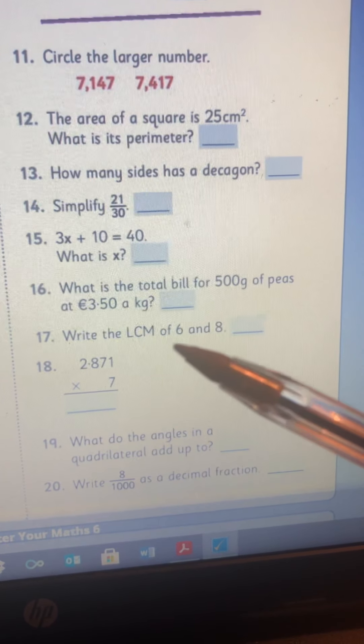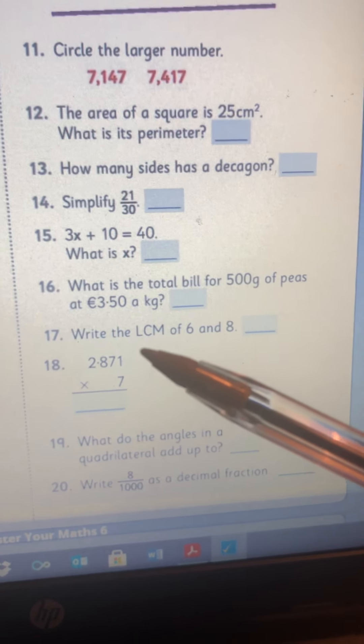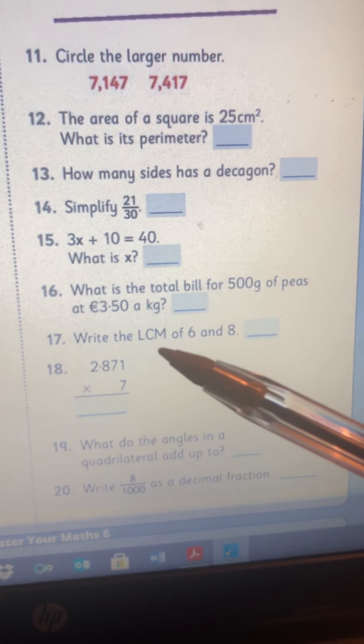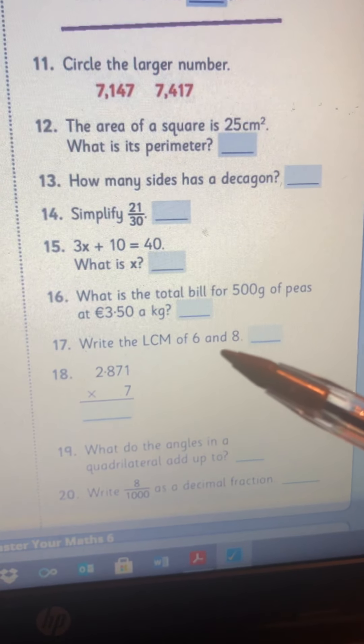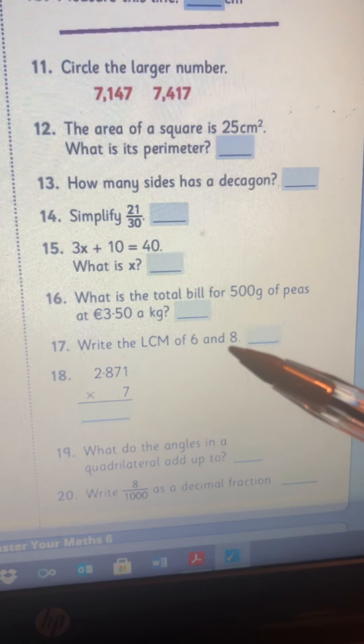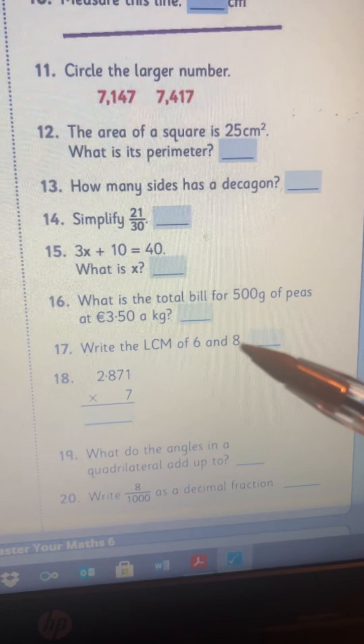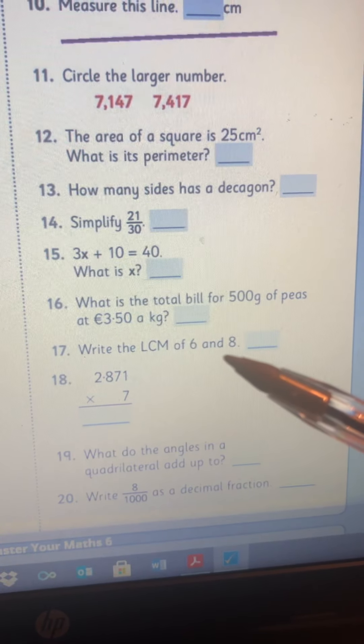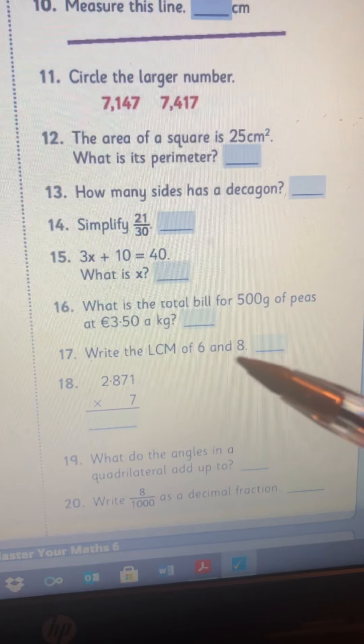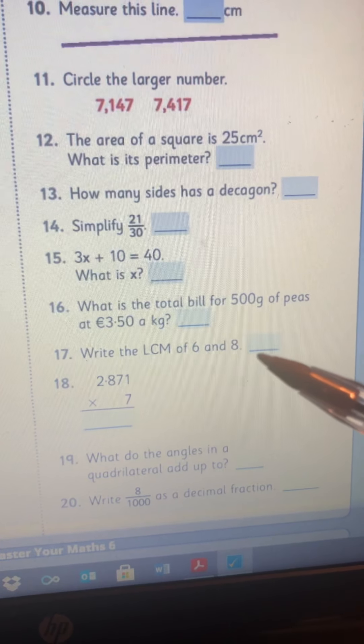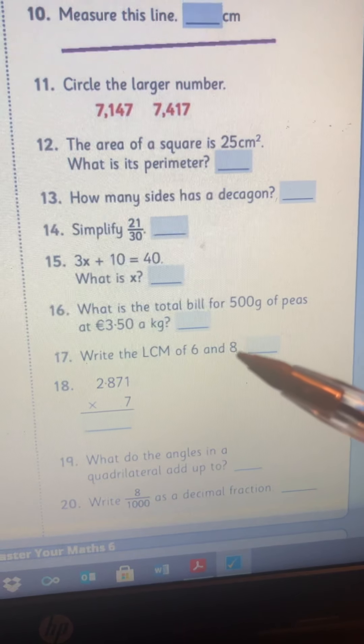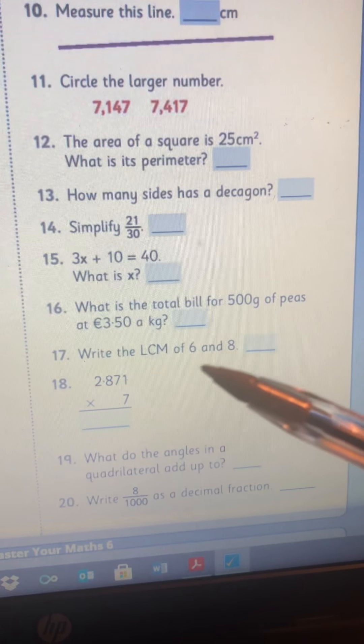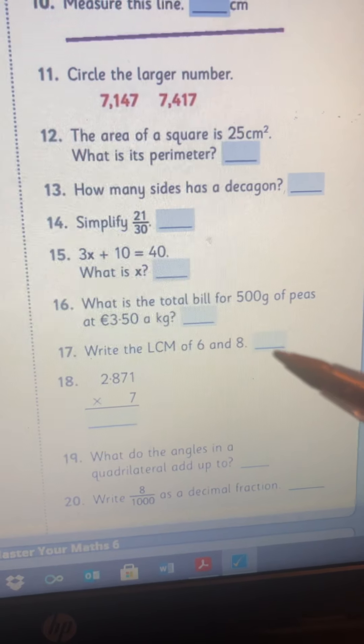17, the LCM, hopefully at this stage you know its lowest common multiple. So what number do 6 and 8 both go into? But the lowest number they both go into. So for example, if you multiply 8 by 6, it's 48, they both go into 48 but there is a lower number than that, that 6 goes into and 8 goes into.